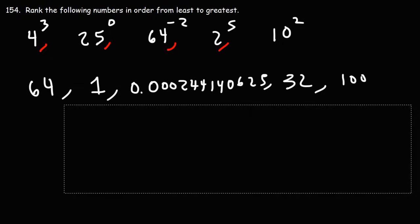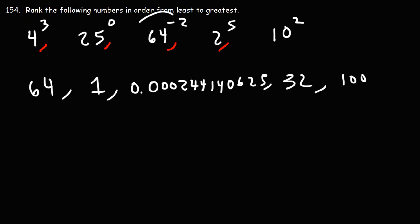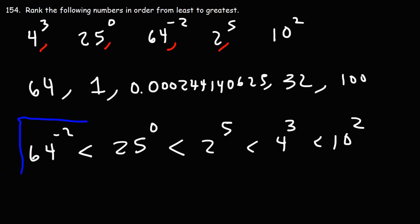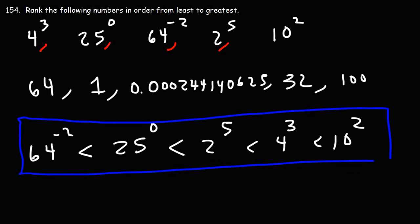So we want to go from least to greatest. 64 to the negative 2 is definitely going to be the smallest — it's close to zero, so we write that first. That is less than 1, which in its original format was 25 to the zero power. After that is 32, which is 2 to the fifth. Then 64, which is 4 cubed. And then 10 squared is the largest at 100. So that's how we rank these numbers in order from least to greatest.